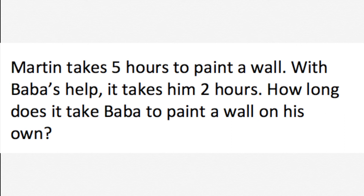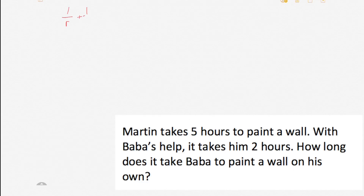All right, another one. Martin takes five hours to paint a wall. With Baba's help, it takes him two hours. How long does it take Baba to paint a wall on his own? We use the same formula: one over R plus one over S equals one over T. The difference here is we have Martin's time and the time it takes them to do it together, but what we don't have is Baba's time.